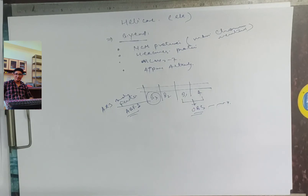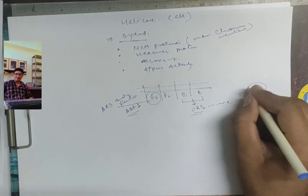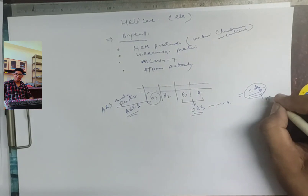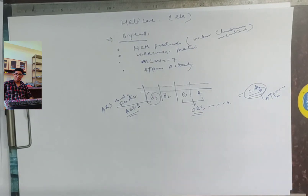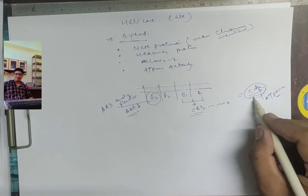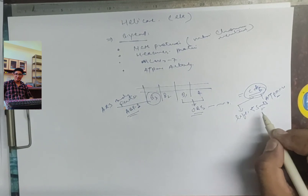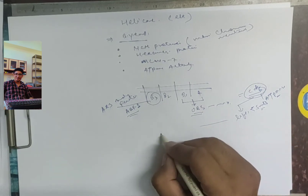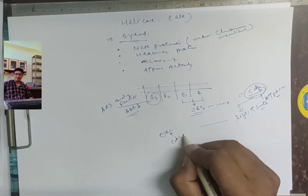MCM protein binds with another protein called CDC6. CDC6 also has ATPase activity. CDC6 has a very short average lifespan — less than 5 minutes.